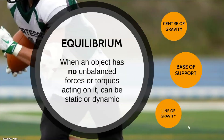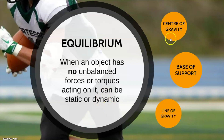Equilibrium is when an object or a person has no unbalanced forces or torques — torques are rotational forces — acting on it. This could be in a state of static or dynamic equilibrium. These are the three things that affect equilibrium.